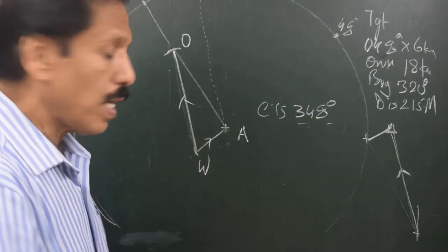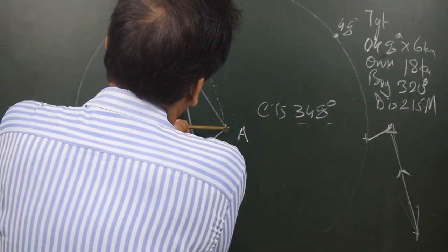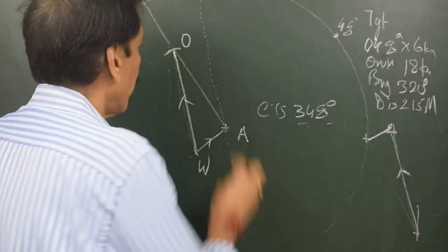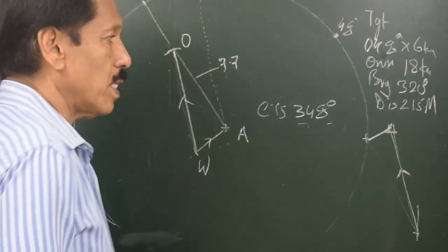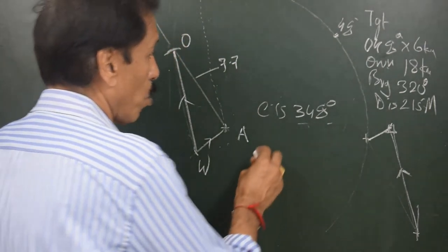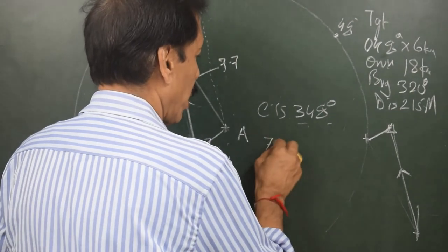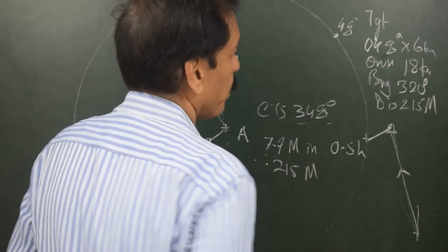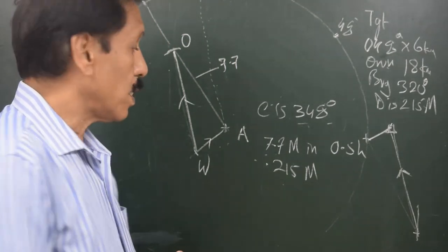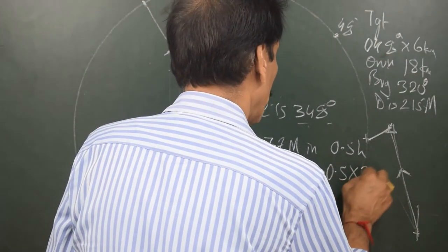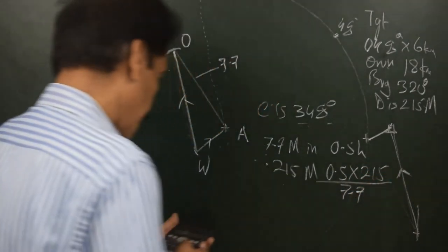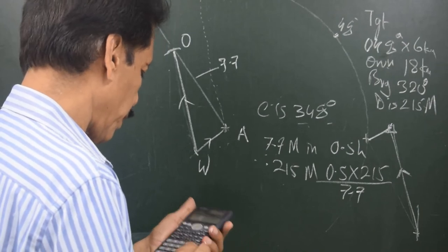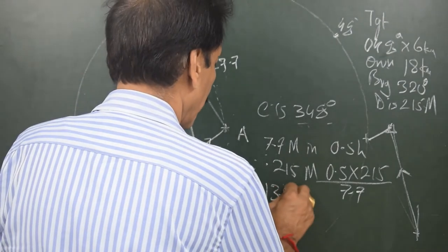Let me measure how much distance is traveled. I find this distance to be approximately 7.7 miles. The original distance is 21.5 miles, so I form a simple equation: 7.7 miles in 0.5 hours. Therefore, 21.5 miles will be covered in 0.5 × 21.5 ÷ 7.7, which gives 13.96 hours.